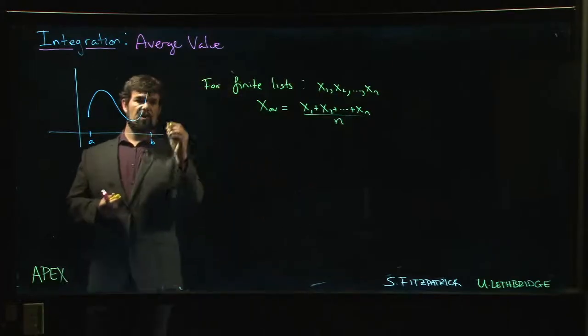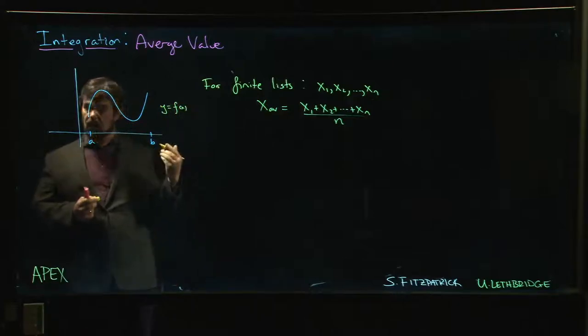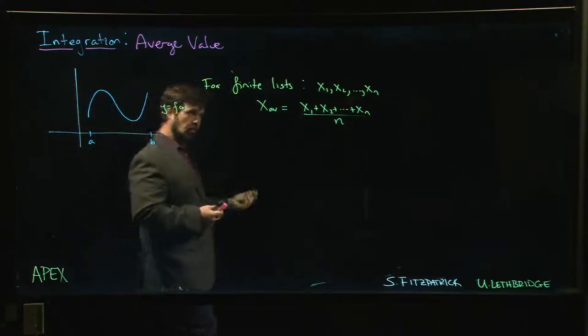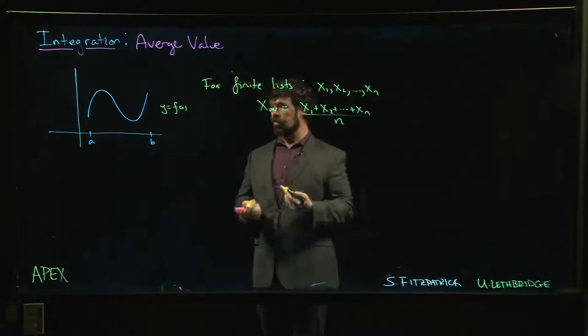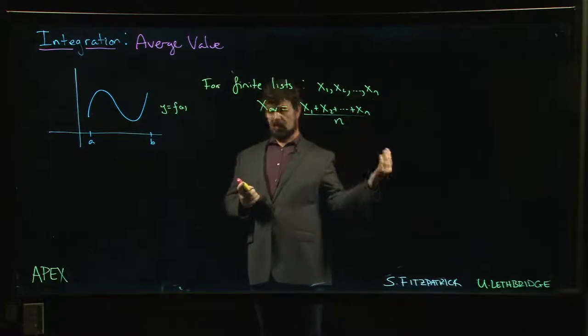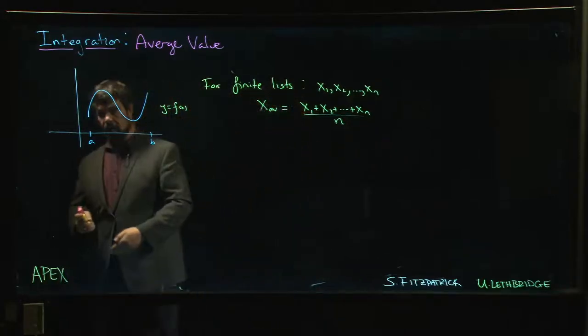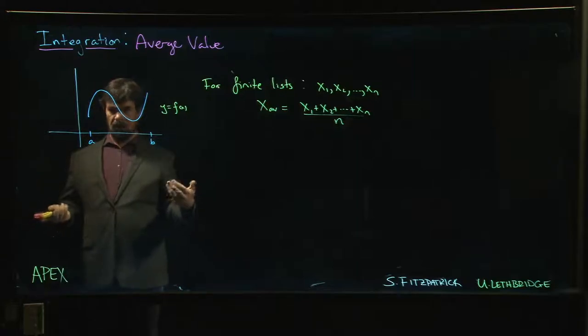But now we're in a much different situation here. We want to calculate the average value for some quantity which is not a discrete quantity like this—it's a continuously varying quantity. Think about velocity: you have an object that's moving with varying speed, varying velocity, and you want to calculate the average.